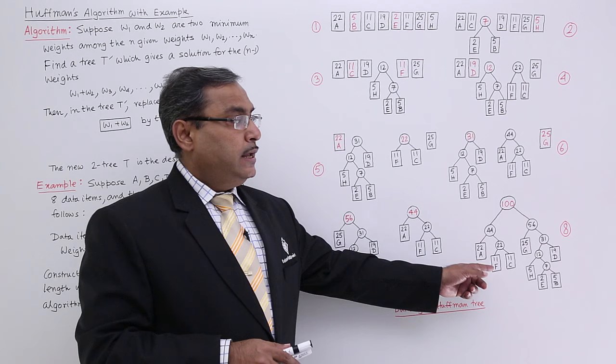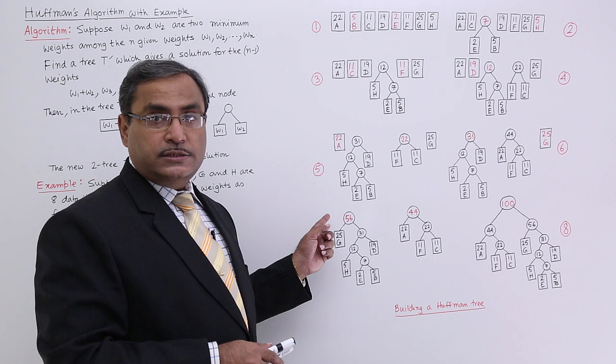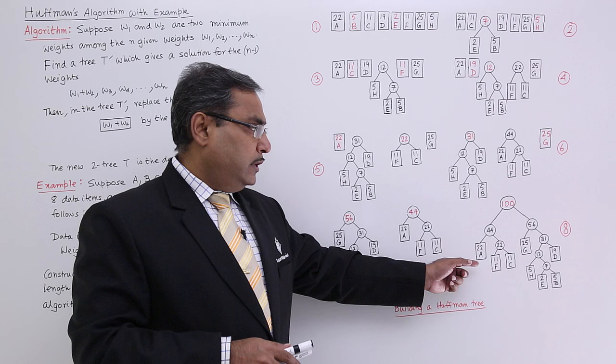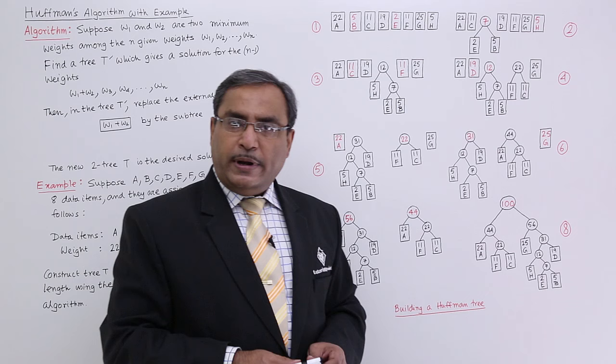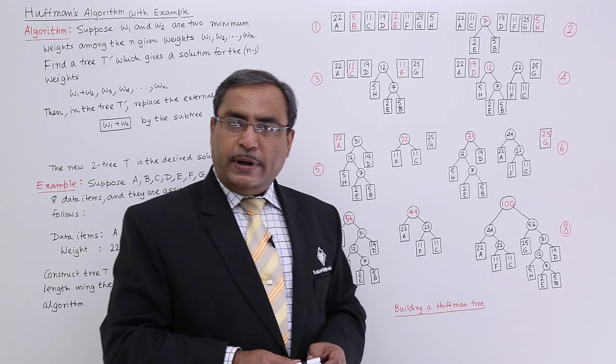Building a Huffman tree, that is the Huffman tree we have built and that is the solution we are getting. And in this way, we have numbered this particular figures. So 1, 2, 3, 4, up to 8. In the figure number 8, I am having this particular solution at the 8th figure. So in this way, using this Huffman algorithm, the Huffman tree can be formed. Please do some practice with some other set of data and get a grip over the subject. Thanks for watching this video.